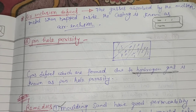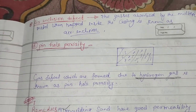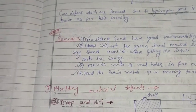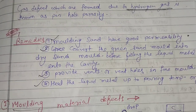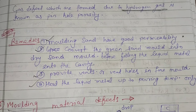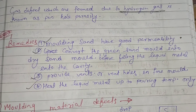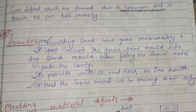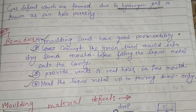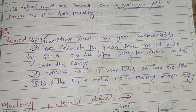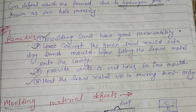Now, what are the remedies to decrease these gas defects? First, the molding sand should have good permeability. Convert the green sand mold into a dry sand mold before filling the liquid metal into the cavity. Provide a vent hole in the mold and heat the liquid metal up to pouring temperature only.